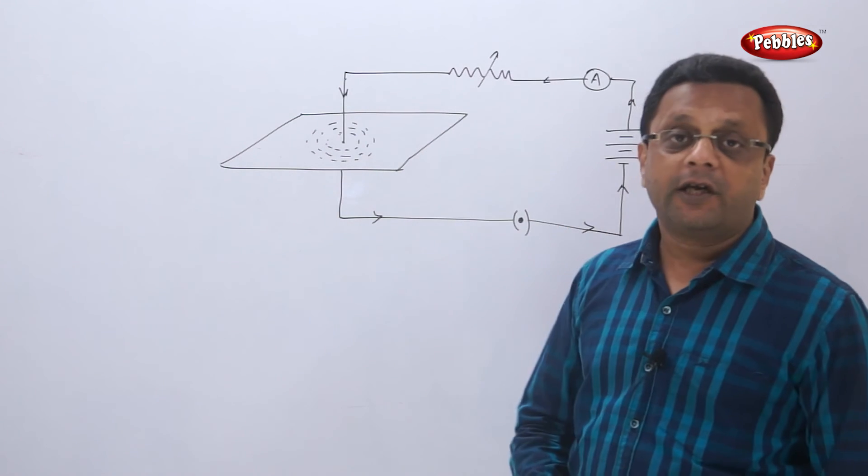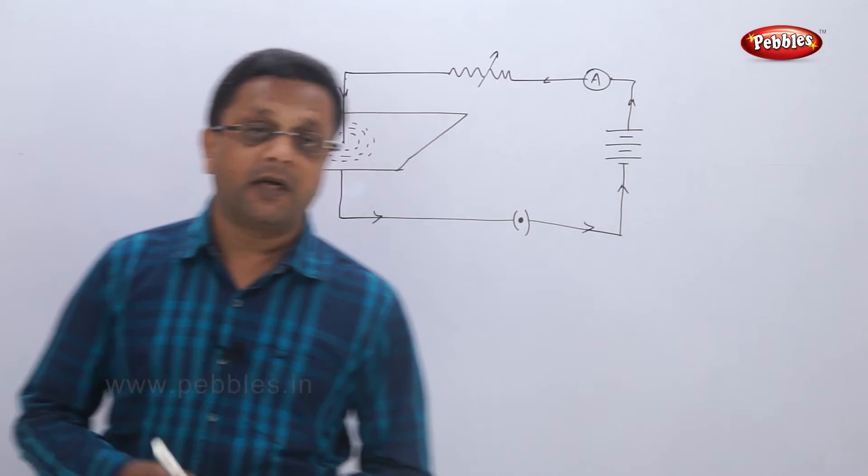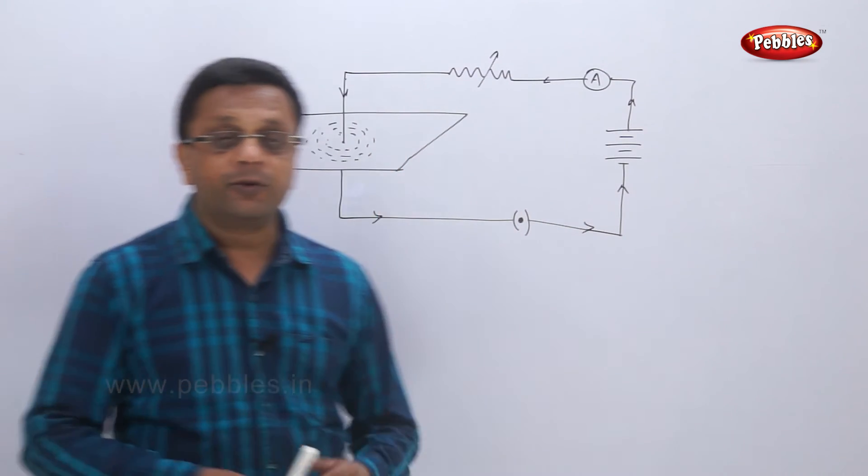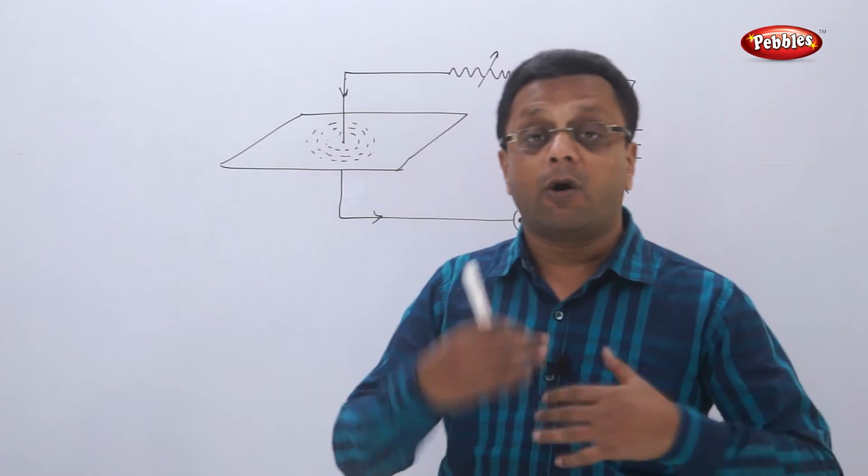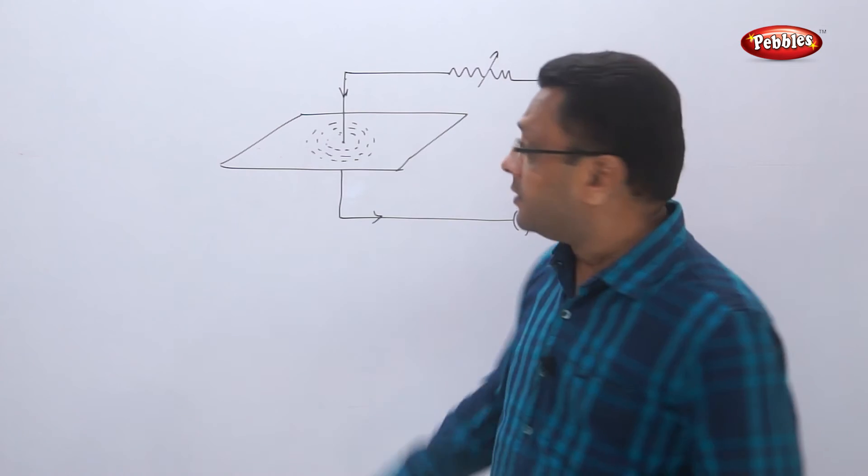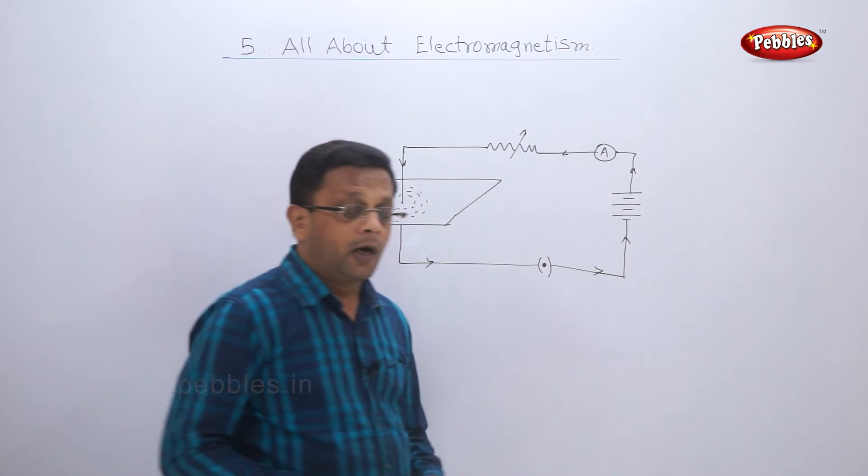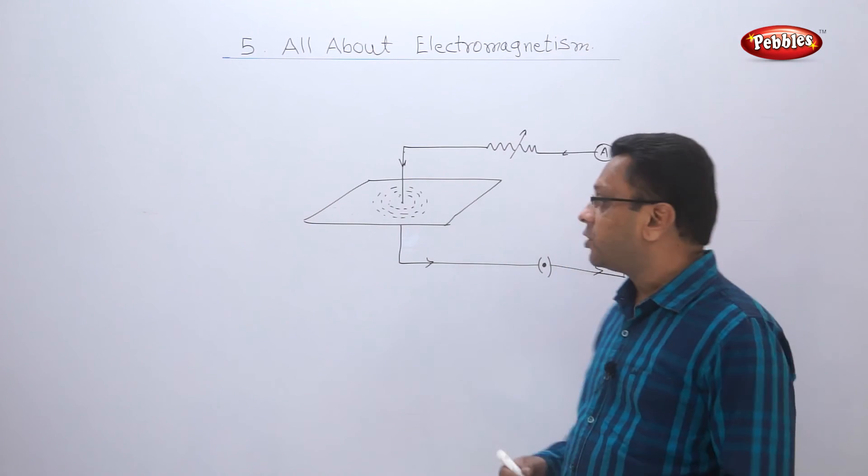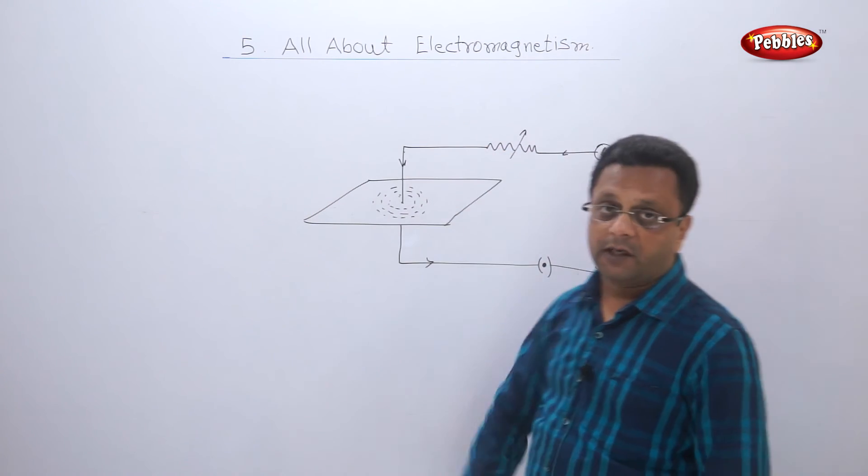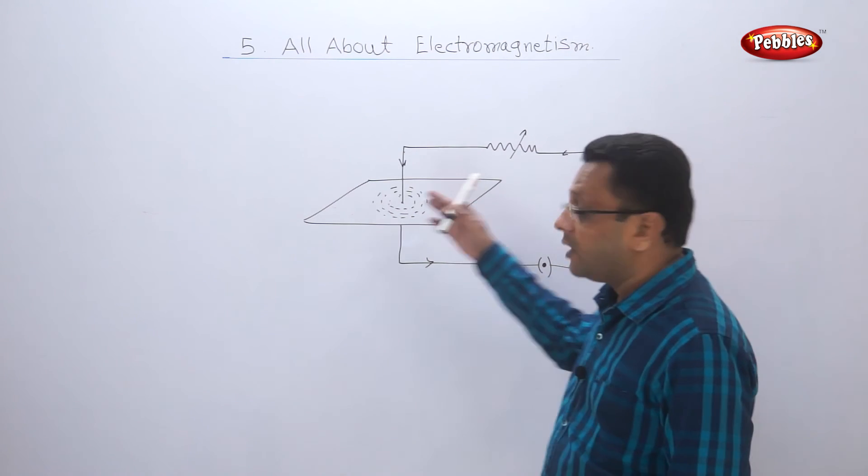This experiment clearly showed that the current, when passing through some conductor, induced the temporary magnetism, which we call as electromagnetism in that current carrying conductor. So ultimately what conclusion you get? First, whenever the current passes through some conductor, the temporary magnetism is induced in it, which we call as electromagnetism.